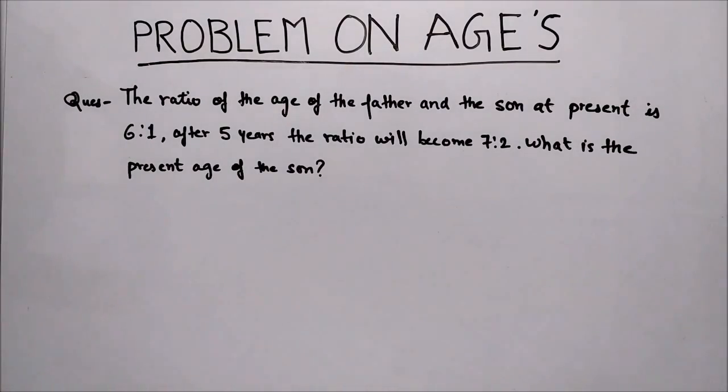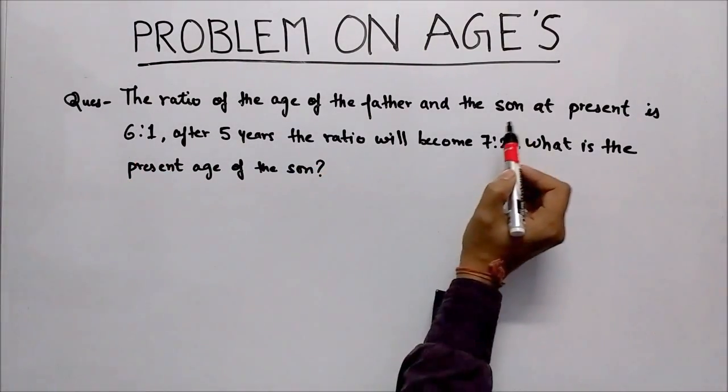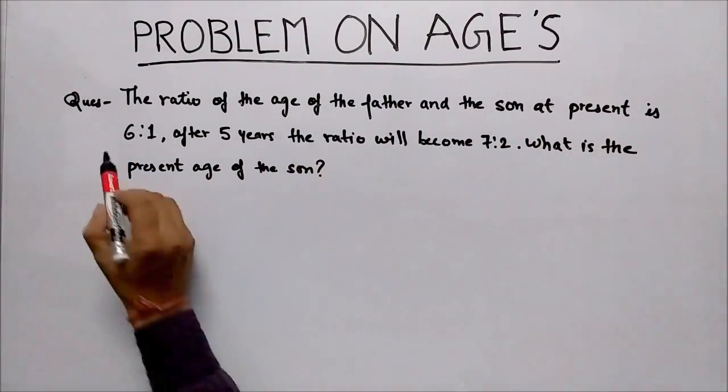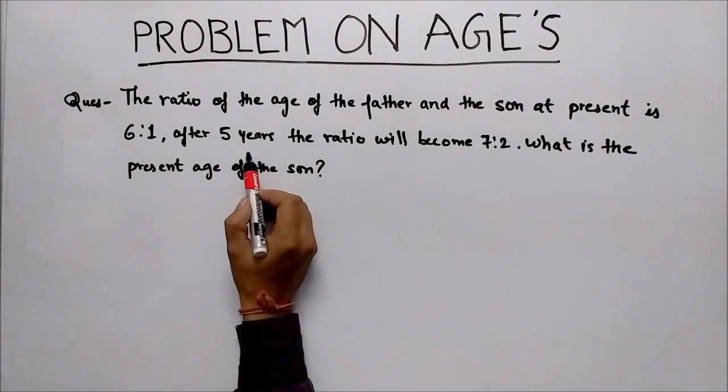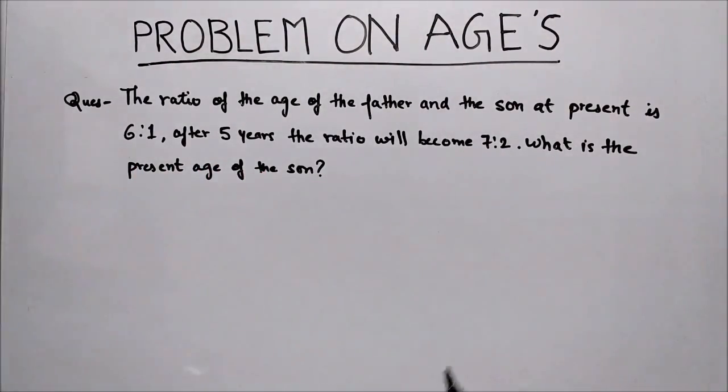Now solve the second question. The question is: the ratio of the age of the father and the son at present is 6:1. After 5 years, the ratio will become 7:2. What is the present age of the son?